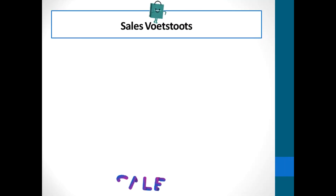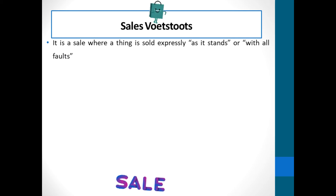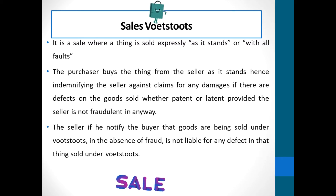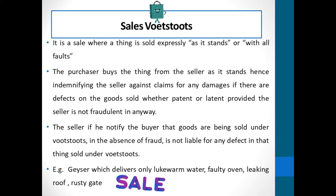Voetstoots sales. It is a sale where a thing is sold explicitly as it stands, or with all faults. The purchaser buys the thing from the seller as it stands, hence indemnifying the seller against claims for any damages if there are defects on the goods sold, whether patent or latent, provided the seller is not fraudulent in any way. The seller, if he notifies the buyer that goods are being sold under voetstoots, is not liable for any defect in that thing sold, in the absence of fraud. For instance, a geyser which delivers only cold water, a faulty oven, a leaking roof, or a rusty gate.